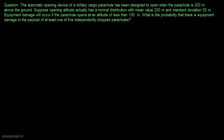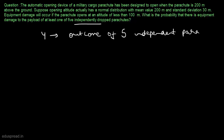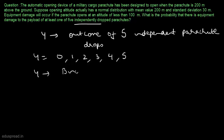Now we have to find the probability that there is equipment damage to the payload of at least 1 of 5 independently dropped parachutes. Let Y be the outcome of 5 independent parachute drops, so Y is a random variable that can take values 0, 1, 2, 3, 4, and 5. As per the information given in the question, we can say that Y is a binomial random variable, and we have to find the probability that at least 1 parachute is damaged — that means we have to find P(Y ≥ 1).